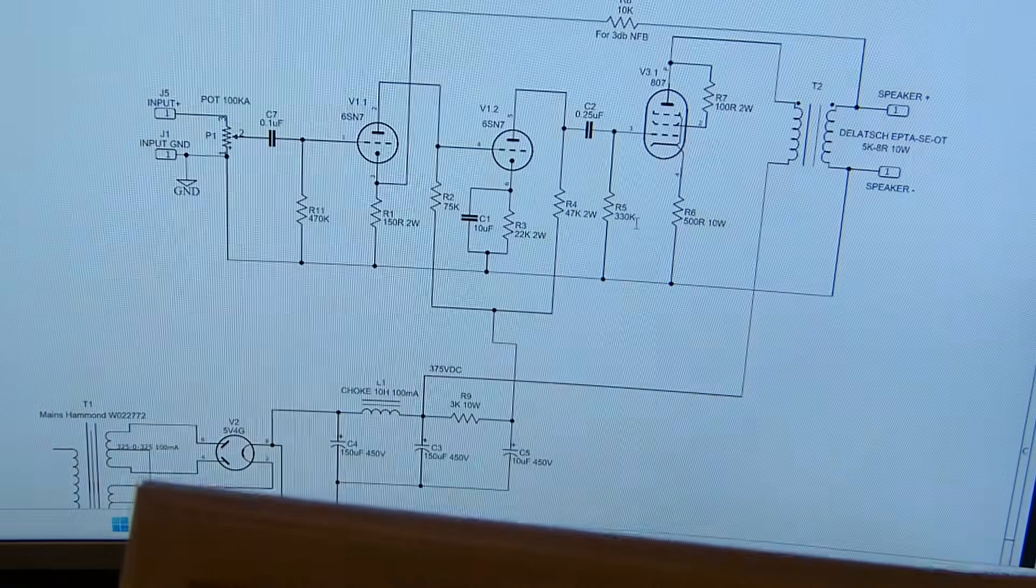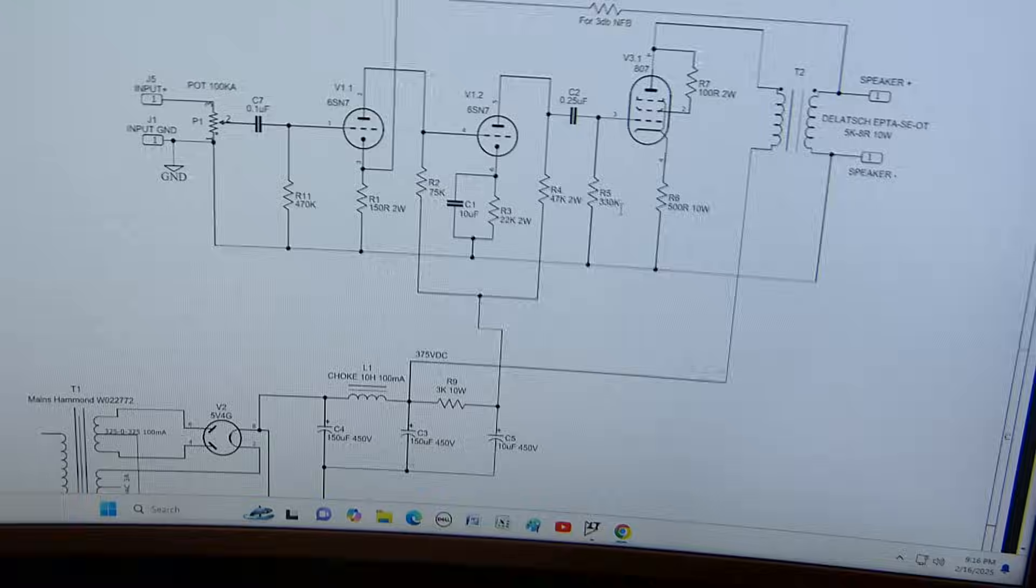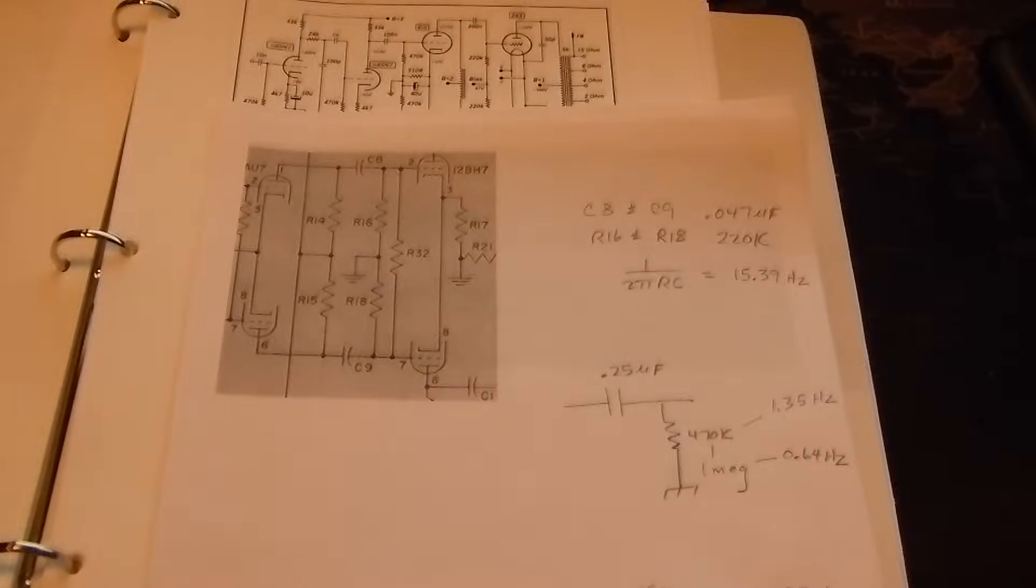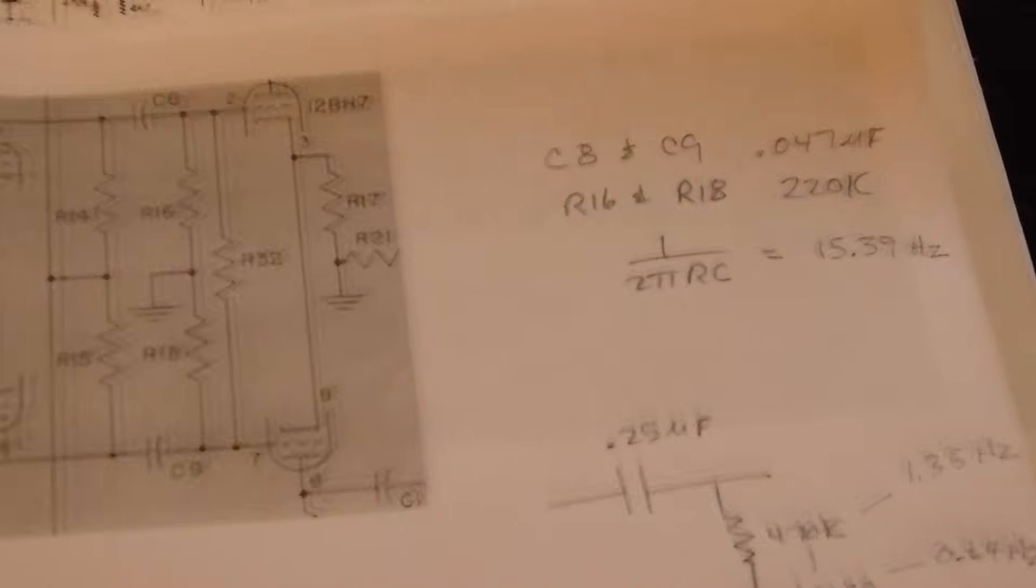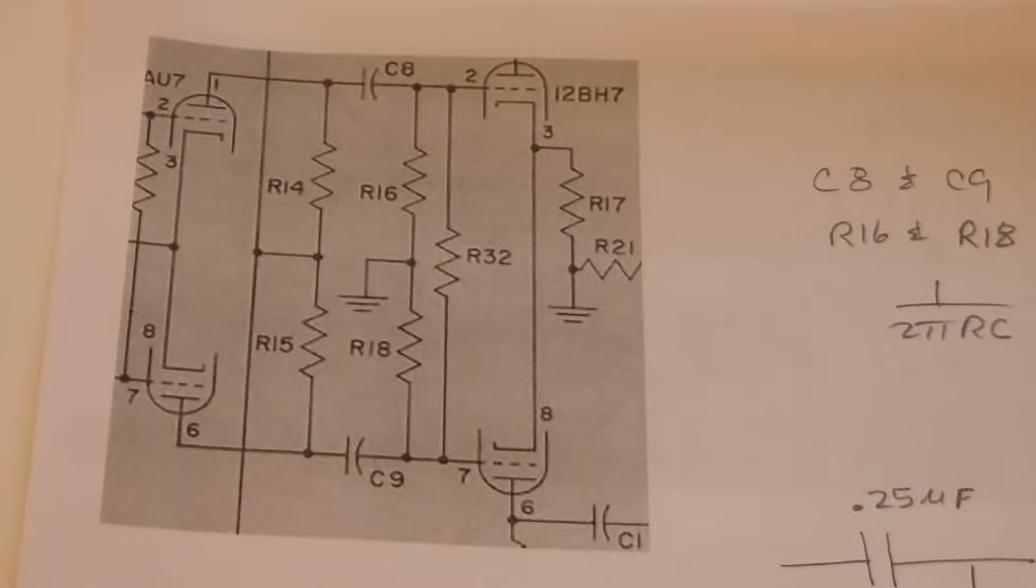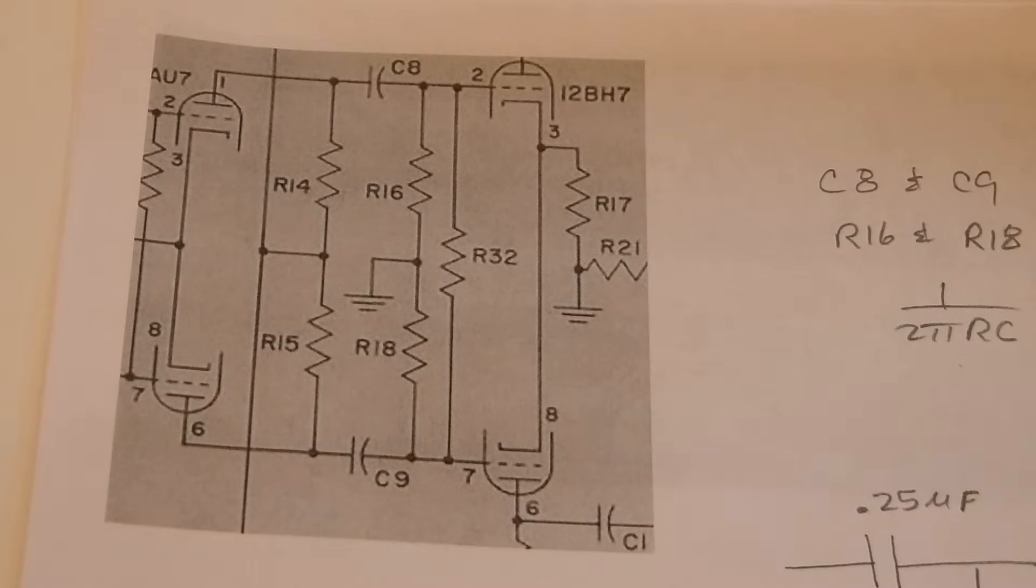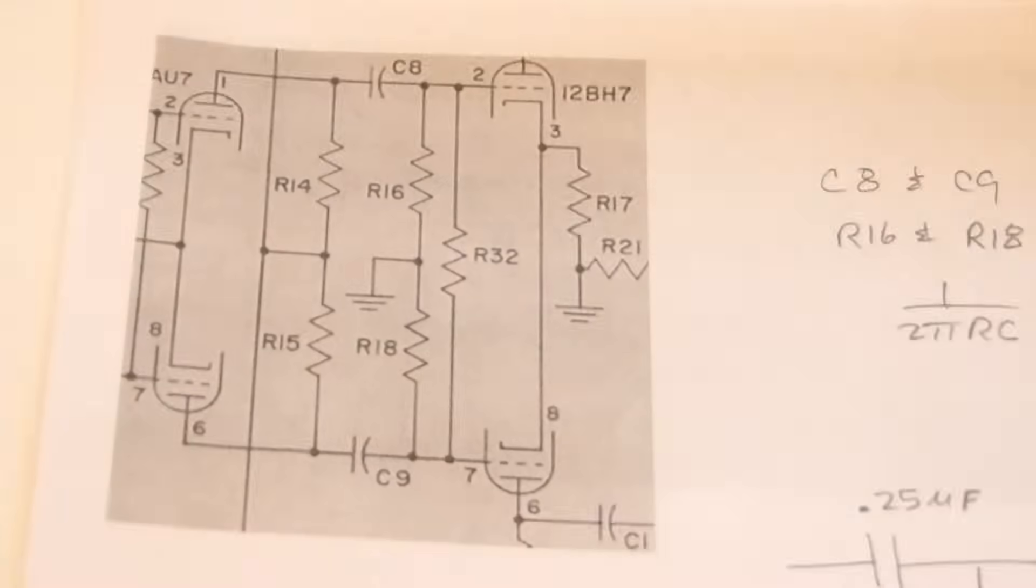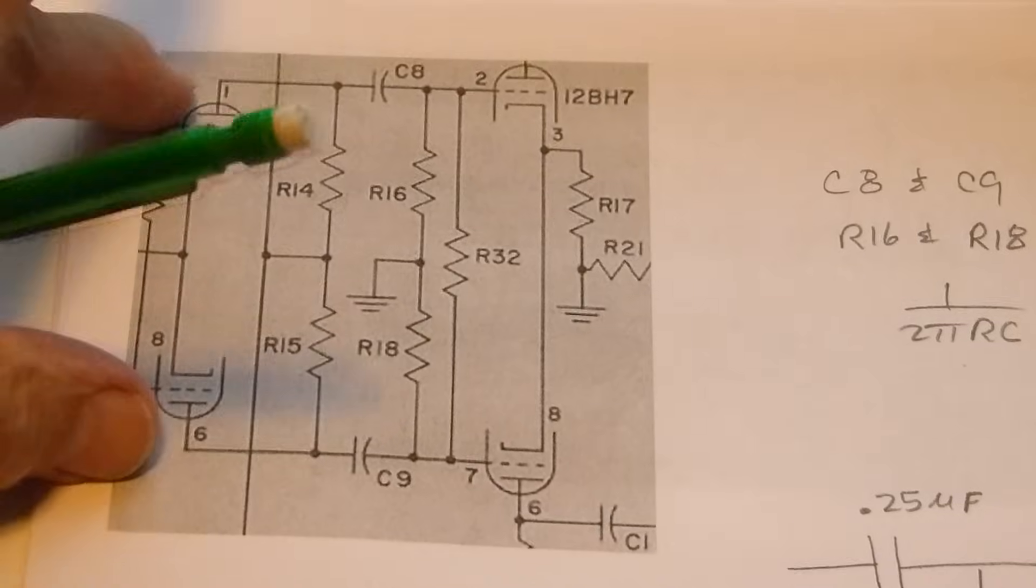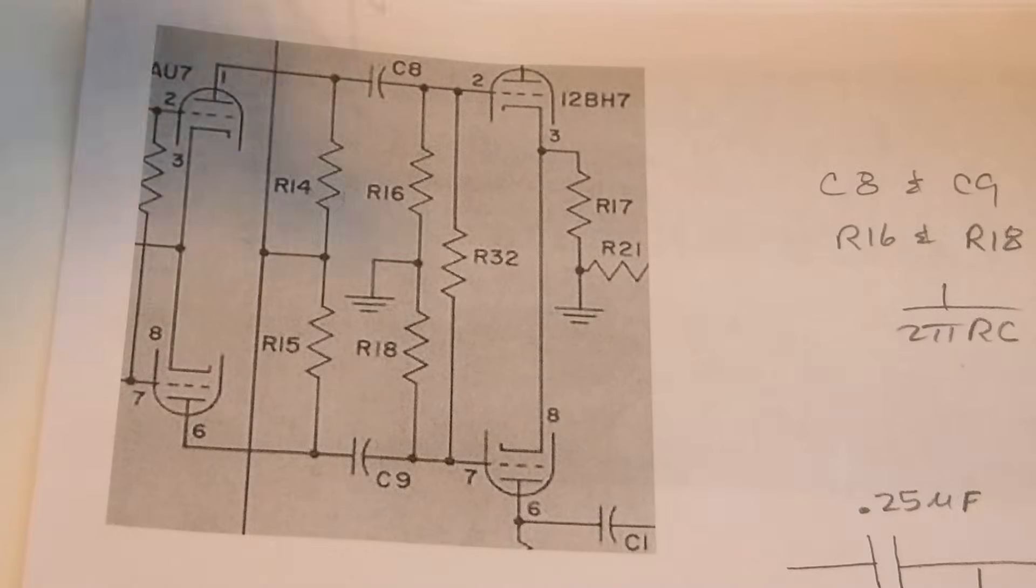See this capacitor right here, C8 and C9? Let's lay it down like this, get the camera down on it so this is very clear. This is from a Macintosh MC30 amplifier, coming out of the push-pull 12AU7s driving the 12BH7s.